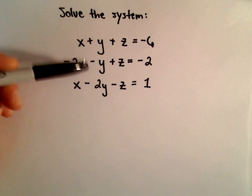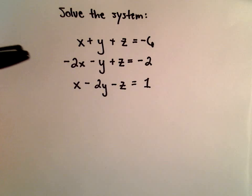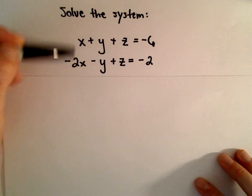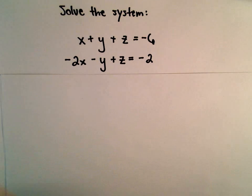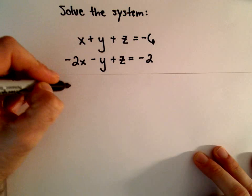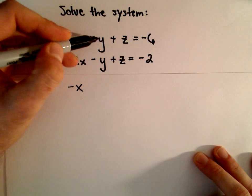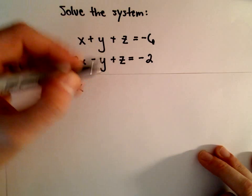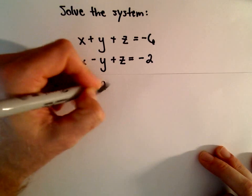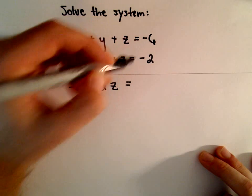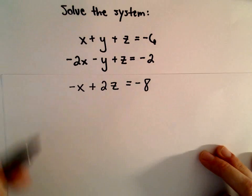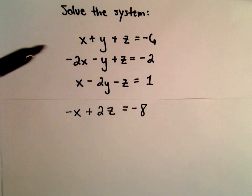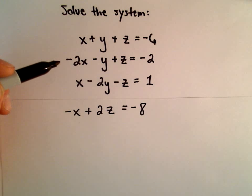Looking at these equations, I can see a couple I could add together to make things cancel. If I add my first and second equation, we would have x plus negative two x, which would be negative x; positive y and negative y would be zero; positive z plus z would be positive two z; and negative six plus negative two will be negative eight. So now I've got an equation involving only x and z.